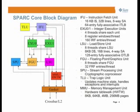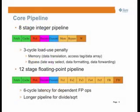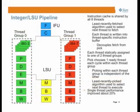This core is then stamped eight times on the die. Looking at the pipeline view, we have the eight-stage integer pipeline and 12-stage floating point pipeline. For the integer pipeline you can see the two groups — the four-thread pairs — with the various stages of the integer pipeline mirrored and then going to the LSU.